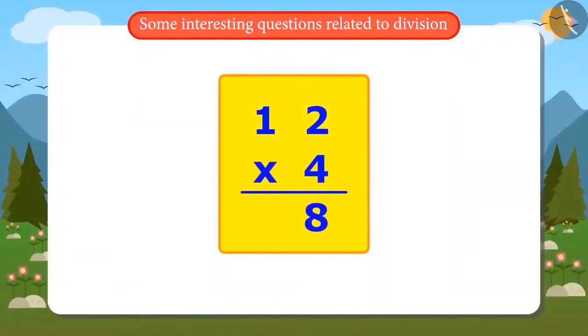4 times 2 is 8 and 4 times 1 is 4. The answer came 48. Oh, what? The answer should have come to 408. That means I have made a mistake in dividing.